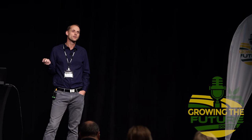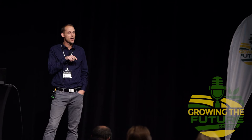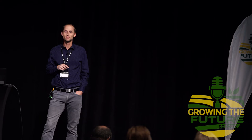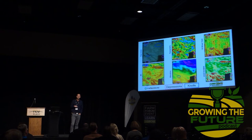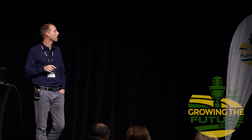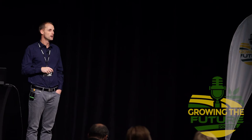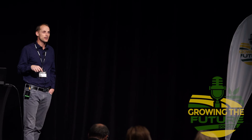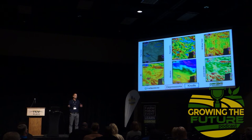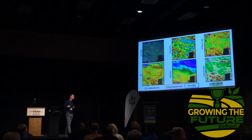In this field, the depressions happen to yield the same as the knolls. There's a fair bit of textural difference, no salinity at all, but the depressions are often wet — it's in north-central Alberta, a relatively wet climate. They've lost a lot more yield to too much water than not enough in that area. The electrical conductivity map is measured with an EM38 inside one of our SWAT boxes — you can also measure EC with Veris machines. EC data is a function of soil texture and salt. Usually you get high conductivity in depressions, especially if they're saline, and low EC values in the knolls.